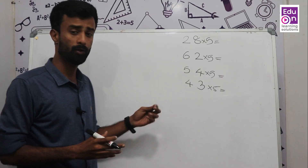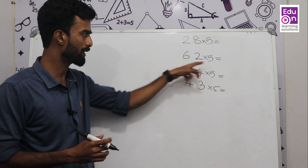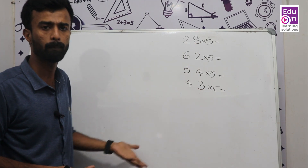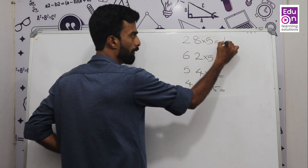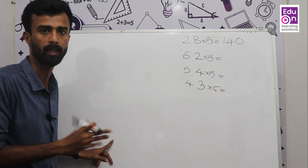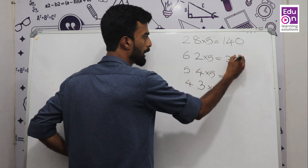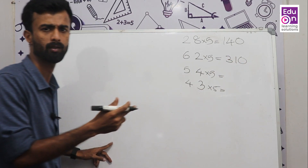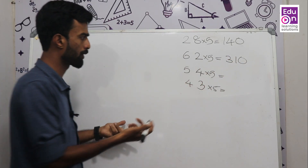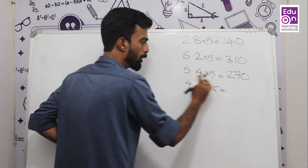Let's try some examples. 62 × 5: half of 62 is 31, multiply by 10 gives 310 — done in 2 seconds. Question: 54 × 5 = 270.